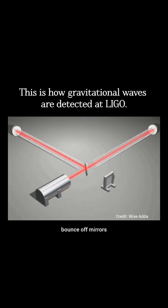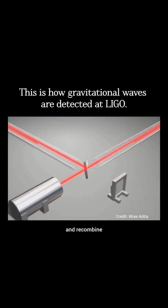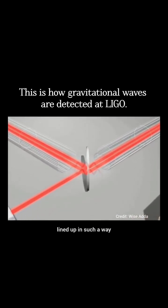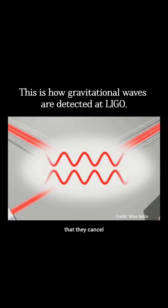The two beams bounce off mirrors and recombine back at the base. The light waves come back lined up in such a way that they cancel each other out.